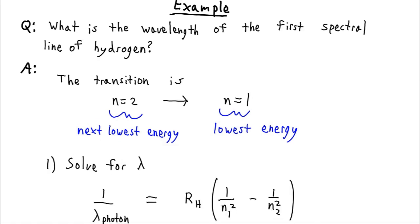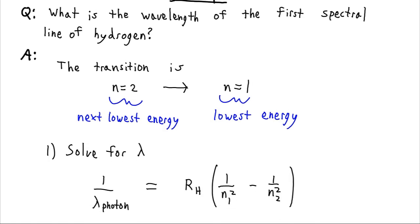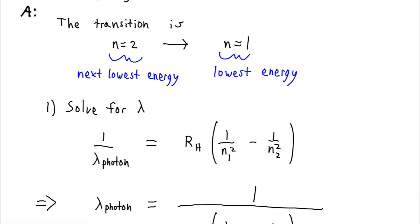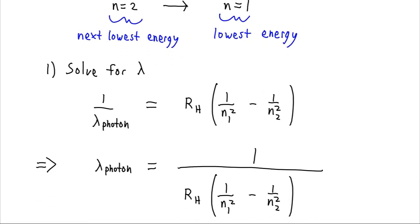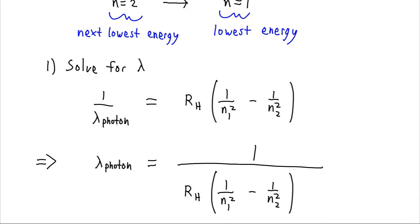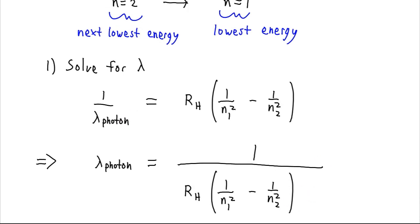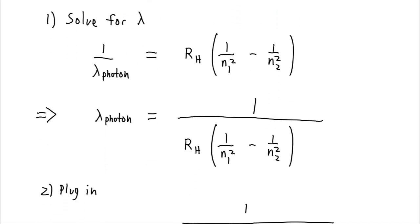So, we can pull out our Rydberg formula. And we want to find the wavelength. So, let's go ahead and solve this for lambda. We want to flip lambda up top here. So, that means we need to flip the other side, take its reciprocal.